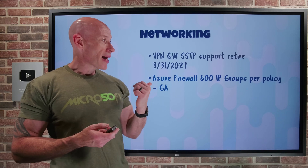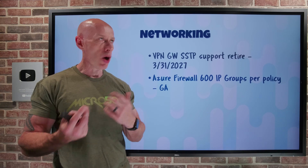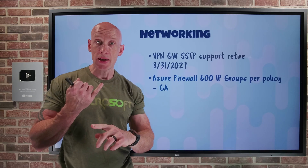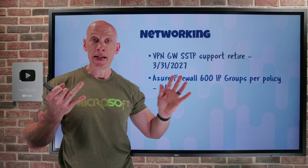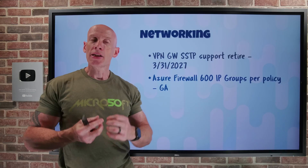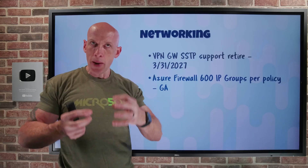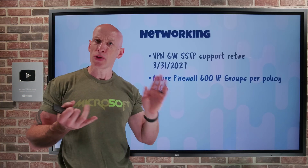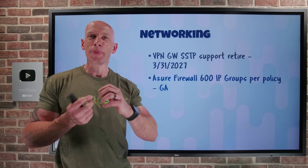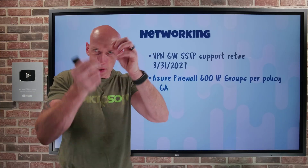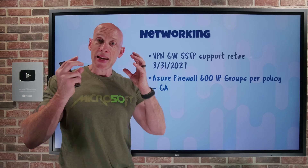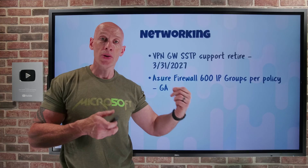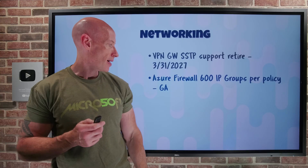Azure Firewall now supports up to 600 IP groups per policy. The whole point of an IP group is it's a list of IP addresses — single IPs, multiple IPs, IP address ranges. You create these groups so you can reuse them in various places across DNAT rules, network rules, and application rules — saving you from constantly recreating those specific IPs. Now in a single policy you can include up to 600 of those IP groups, up from 200. A much better scale capability.